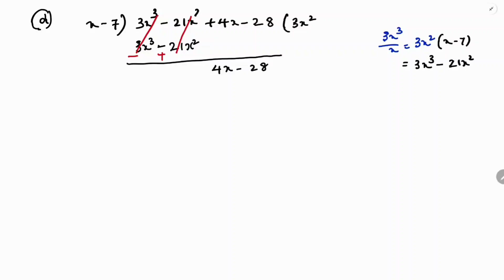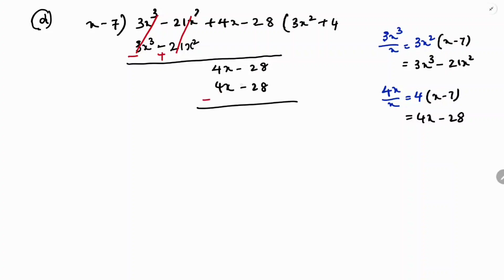The first remaining term is 4x divided by x, which gives 4. Write +4 in the quotient and multiply with x - 7: 4 × x = 4x, and 4 × 7 = 28 (with minus sign). So we get 4x - 28. Subtract: 4x cancels, -28 + 28 cancels, remainder is 0. So the answer is 3x² + 4.